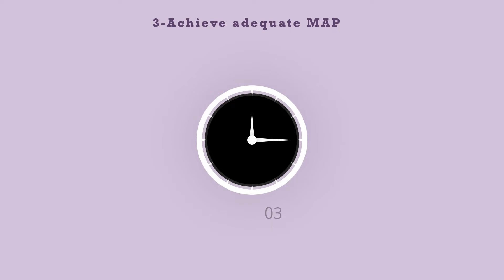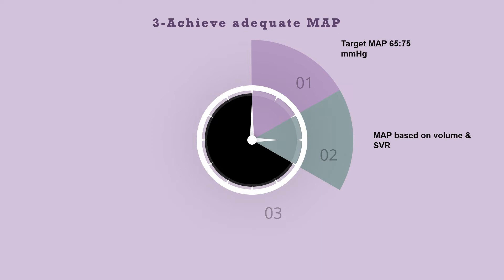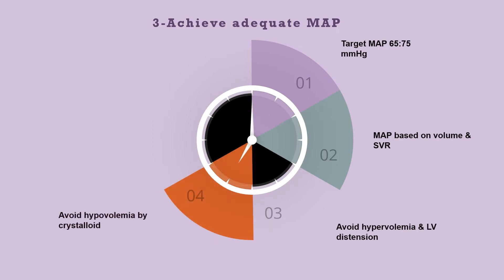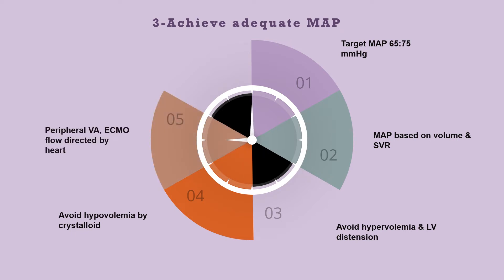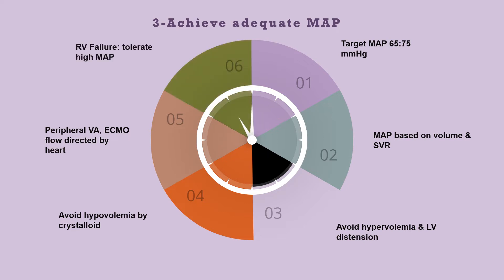The third point in initiating ECMO is achieving adequate mean arterial blood pressure. The normal target is 65 to 75 mmHg. MAP should be maintained based on volume and systemic vascular resistance. We should avoid hypervolemia as it may cause left ventricular distension, and avoid hypovolemia by giving crystalloid. In peripheral VA ECMO, the flow is directed against the heart, leading to left ventricular distension. In right ventricular failure, patients may tolerate higher mean arterial blood pressure.